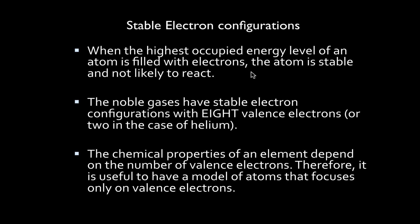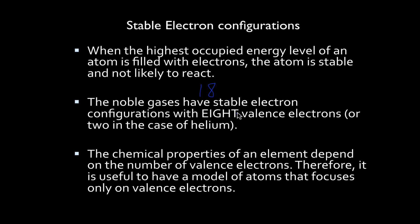Now, stable electron configuration. All of these elements just want to become stable. When the highest occupied energy level of an atom is filled with electrons, the atom is stable and not likely to react. If it's not stable, it's probably going to react with another element to try to become stable. Noble gases are group 18 — they have a stable electron configuration with eight valence electrons.